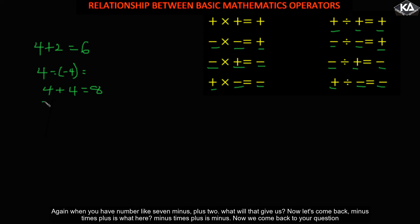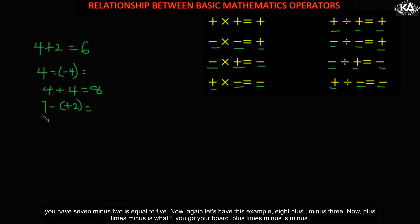Again, when you have a number like seven minus plus two, what would that give us? Minus times plus is minus, so you come back to your question: seven minus two is equal to five.